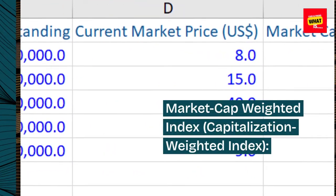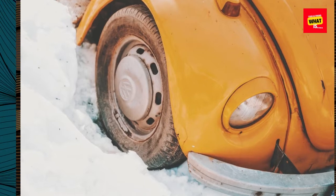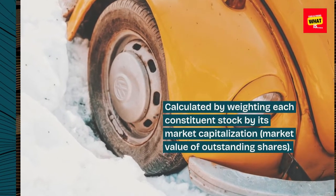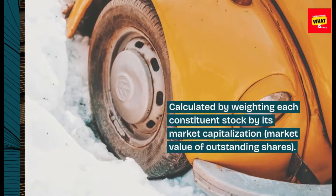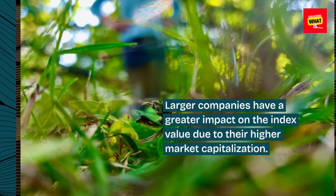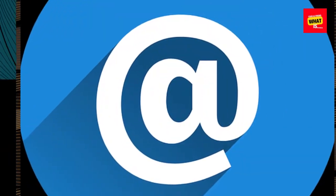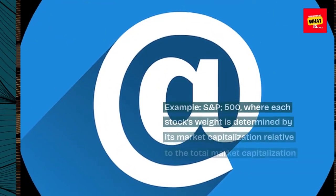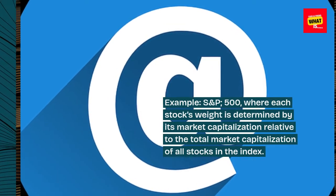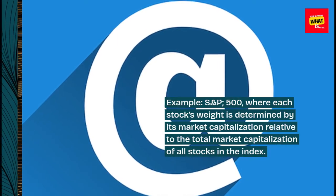Market cap-weighted index, also called capitalization-weighted index: Calculated by weighting each constituent stock by its market capitalization — the market value of outstanding shares. Larger companies have a greater impact on the index value due to their higher market capitalization. Example: S&P 500, where each stock's weight is determined by its market capitalization relative to the total market capitalization of all stocks in the index.